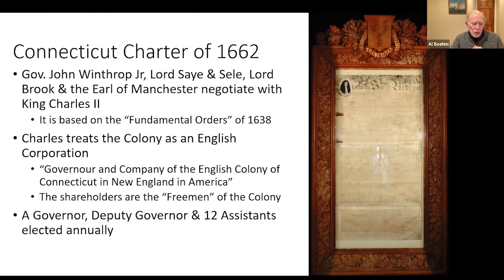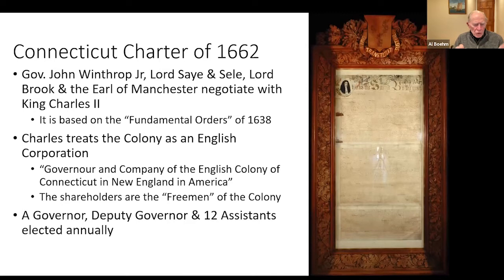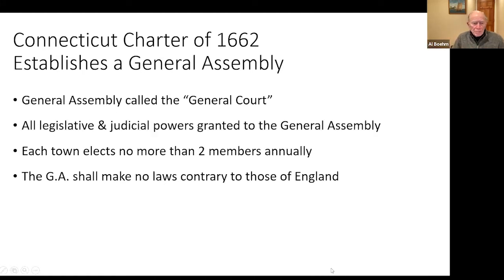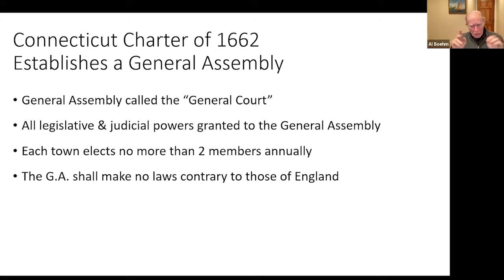The shareholders in this company are the free men of the colony — and when they say men, they really mean men. Indentured servants would not be included until they completed their service and became free men. The charter also recognized a governor, a deputy governor, and 12 assistants elected annually. Their general assembly was called the general court, which basically got all the legislative and judicial powers. Each town could elect no more than two members annually to the general court, and the general court could make no laws contrary to those of England.